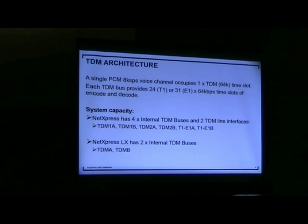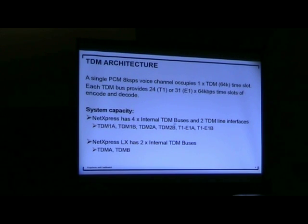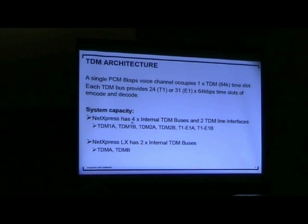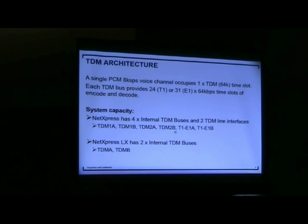There are many ways to construct the streams and we'll cover some of those various combinations. Differences in the systems: the introductory NetExpress system has four internal TDM buses and two line interfaces, so there are six TDM sources or destinations in the box that can be connected to each other or to the IP world.